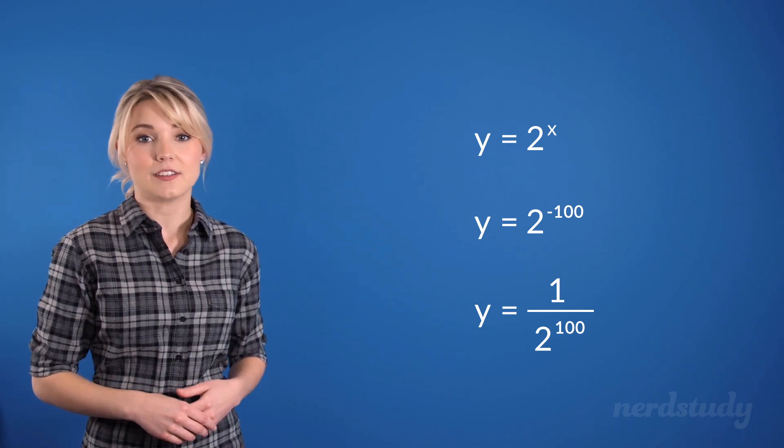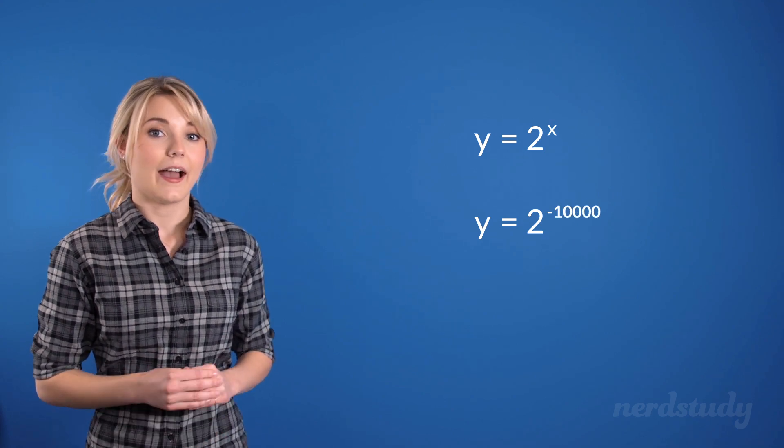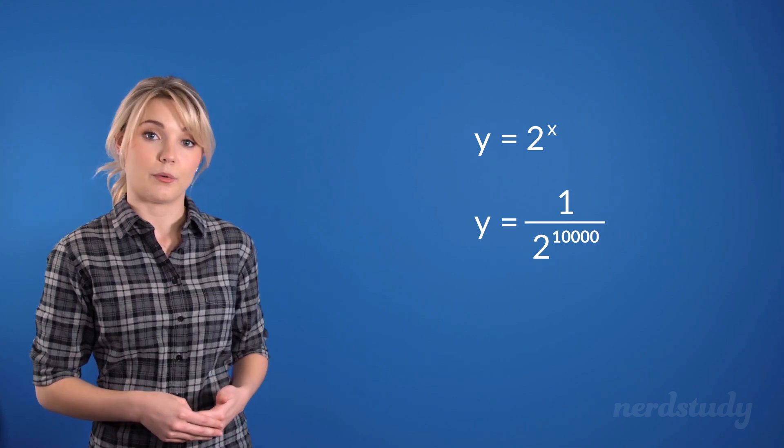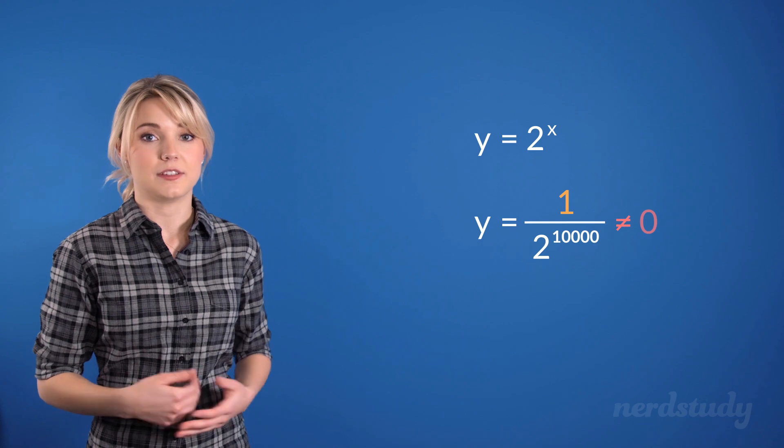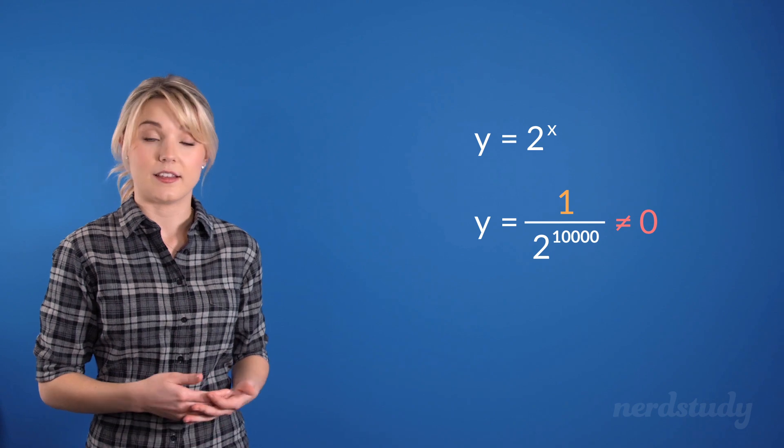Since, once again, no matter how small we make the exponent, a negative exponent will simply result in a fraction with the numerator equaling to 1. And this right off the bat means that it will not ever equal to 0. We know this because a fraction only equals 0 when the numerator is a 0.